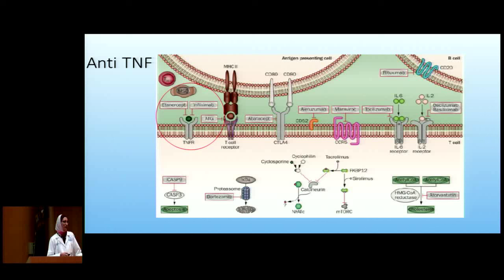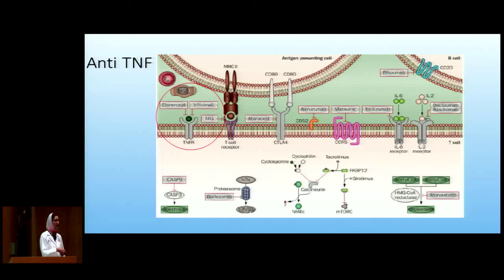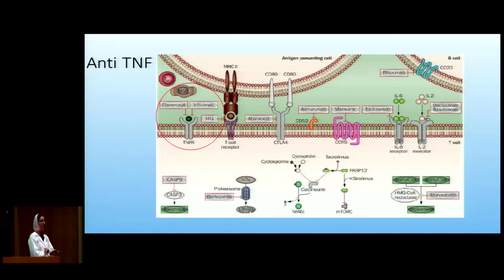Question: Has anybody looked at T cell subsets in portal vein versus cardiac versus intestine in regard to the incidence of solid organ transplant GVHD? The ones I mentioned are specifically for liver and small intestine. The difference is that small intestine and liver are like lymph nodes — they have more NK T cells with NK receptors, reversal of the CD4/CD8 ratio. The heart and lung have fewer T cells compared to lymph node tissue.